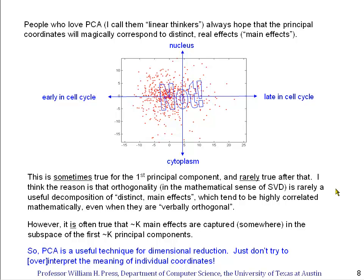However, all is not lost. It is often true that somewhere in the subspace, the full subspace of the first k dimensions, the first k principal components, the first k main effects are being captured. It's simply that they may well not be simply orthogonal and along the components. So PCA is a useful technique, can be a useful technique for dimensional reduction. When there are a small number of principal components that are large and a much larger number that are so small that they're probably noise, then this is a good thing to do. The caution is don't try to over-interpret the meaning of the individual coordinates after perhaps the first one.